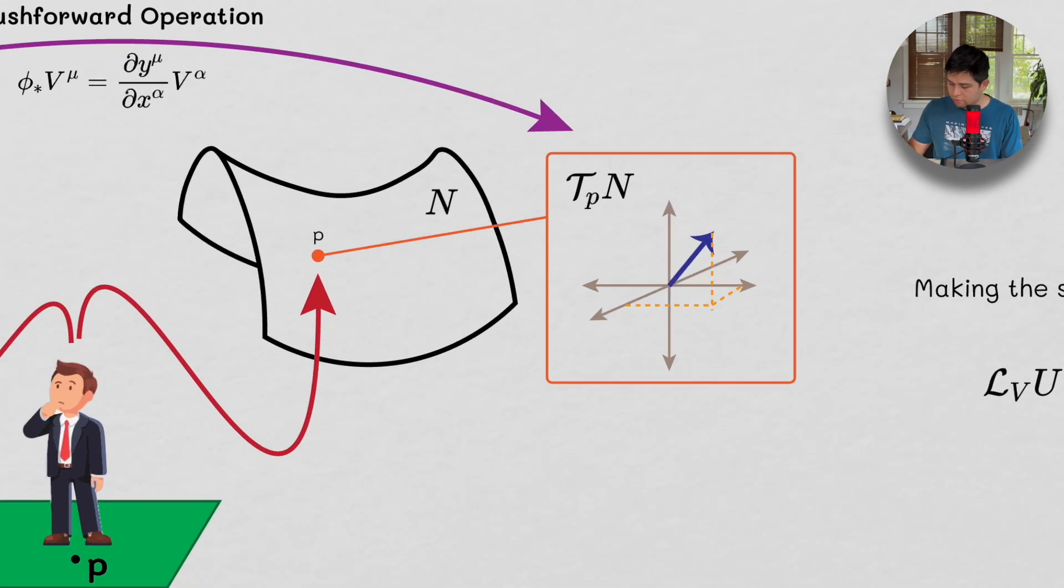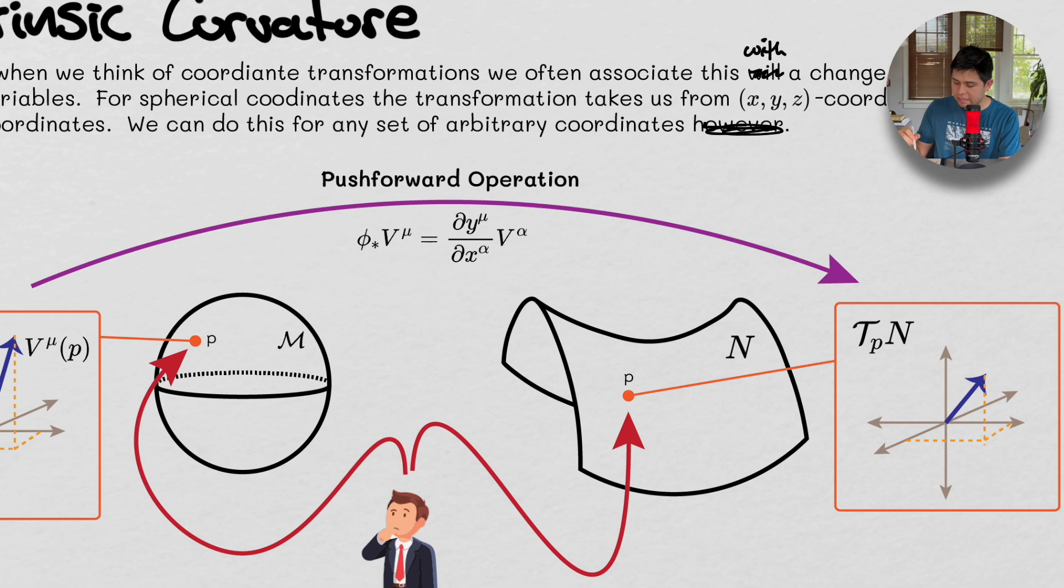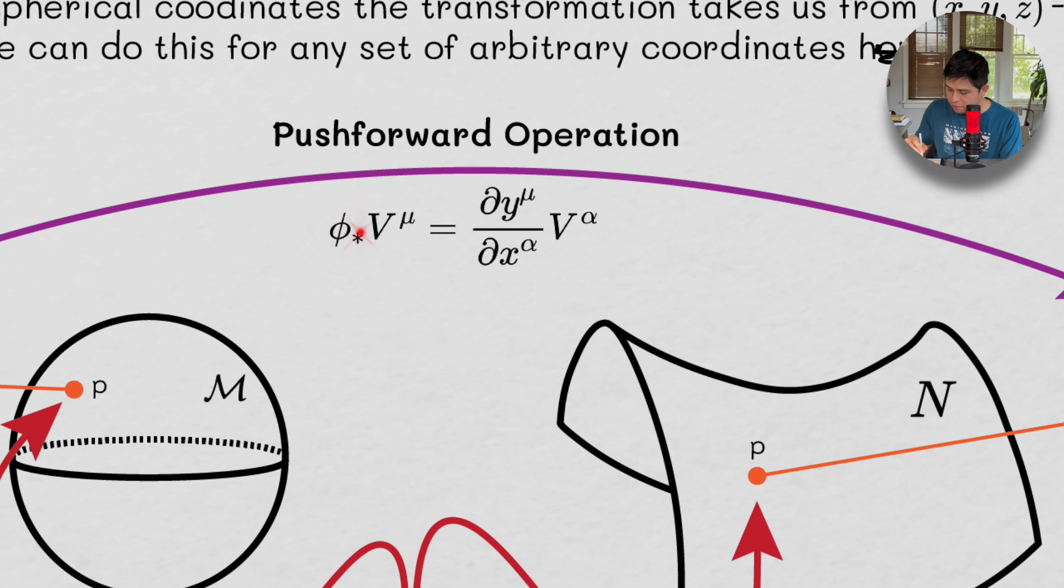However, V might be different in this tangent space, even though you're at the same point P, but you're using different coordinate systems. And the whole idea here is that this object is the push forward operation. So this thing operates on this vector and will give us this as a result.